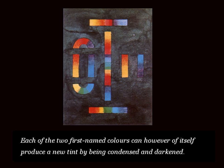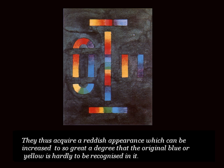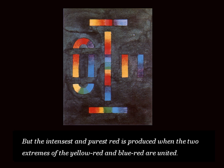Each of the two first-named colors can however of itself produce a new tint by being condensed and darkened. They thus acquire a reddish appearance, which can be increased to so great a degree that the original blue or yellow is hardly to be recognized in it. But the intensest and purest red is produced when the two extremes of the yellow-red and blue-red are united.